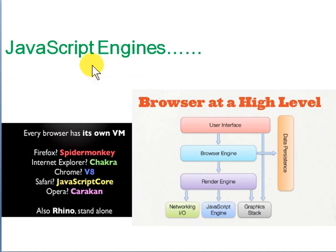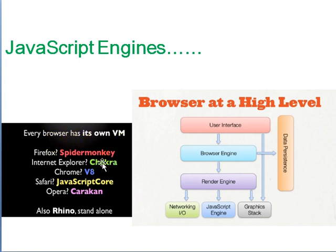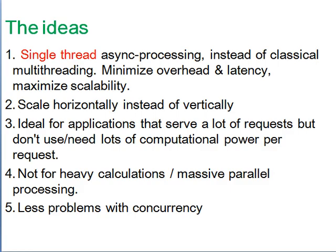Node.js uses a JavaScript engine. In browsers, there's a user interface, a browser engine, a rendering agent, and JavaScript VMs — Firefox, Internet Explorer, V8, and Safari are all front-end engines. Rhino is a back-end engine. The core ideas in Node.js are single-threaded asynchronous processing, as opposed to classical multi-threading in C, C++, and Java.